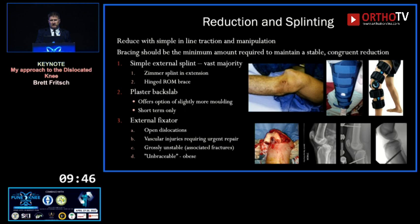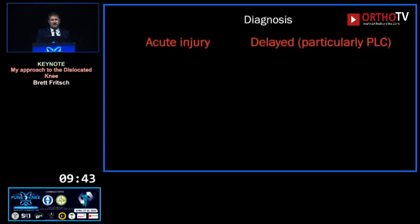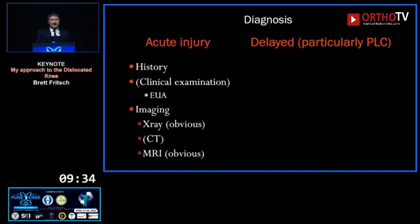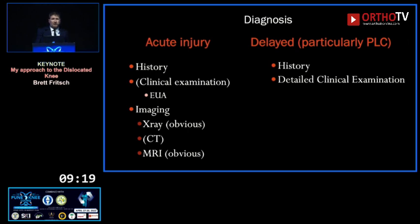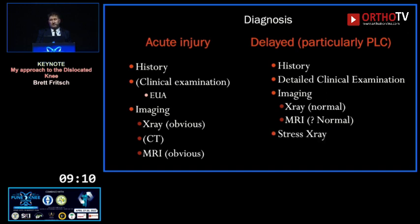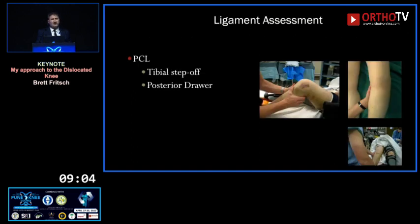The next step: get the diagnosis right. In the acute injury, history is clear and clinical examination is obvious — often done as part of examination under anaesthetic. X-ray shows dislocation or fracture; MRI is the workhorse. In the delayed presentation it's subtler — you need a formal history of exactly what instability they're feeling, formal tests for each ligament complex, and imaging can be surprisingly normal even on MRI following a chronic high-grade posterolateral corner injury. Stress X-rays and gait analysis come to the fore in the chronic setting.